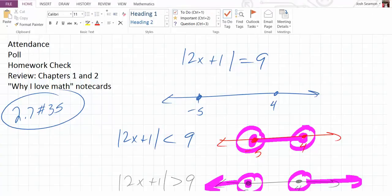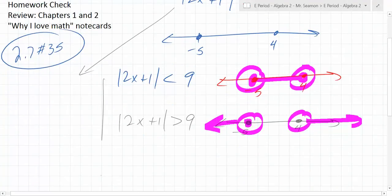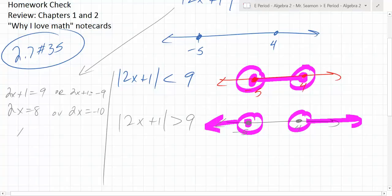If you're going to solve an absolute value inequality, how many cases are there? There's two cases. Either 2x plus 1 equals 9, or 2x plus 1 equals negative 9. So 2x is equal to 8, or 2x is equal to negative 10. So x is equal to 4, or x is equal to negative 5. They did that for you, and they gave you those two points.